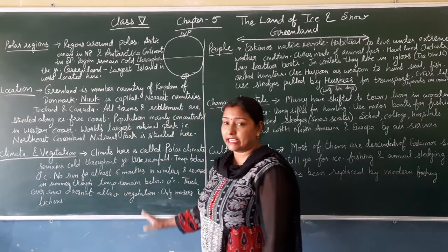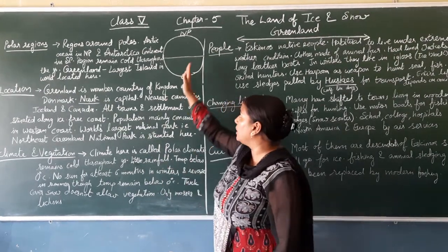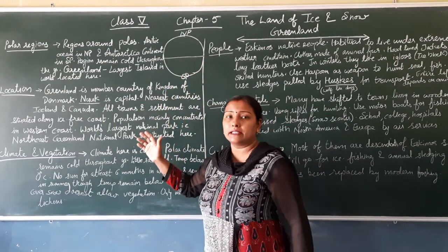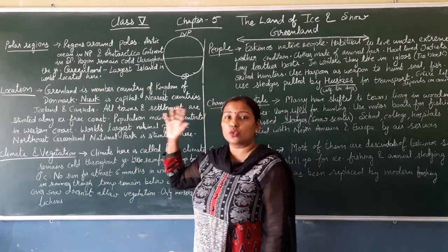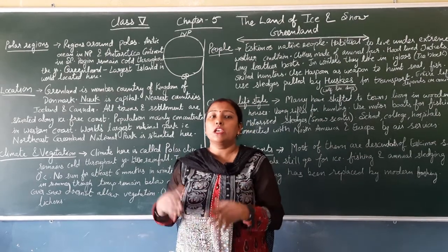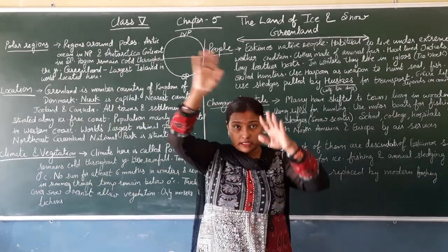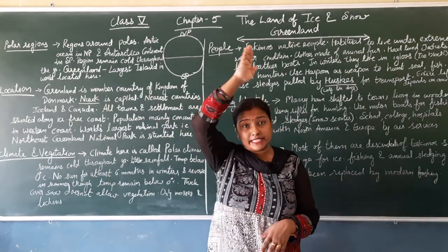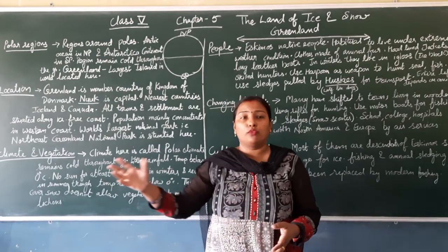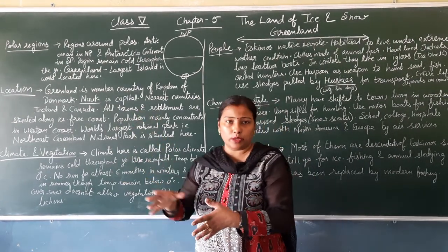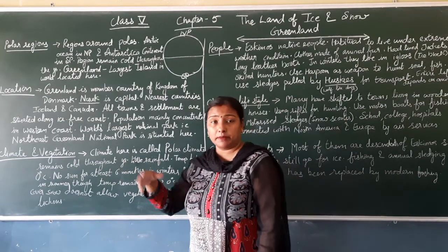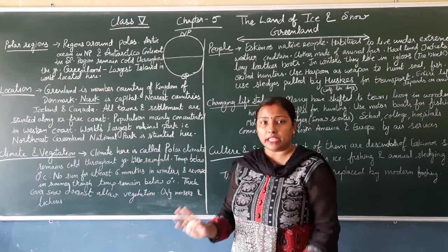There is no sun for about 6 months. When it is winter in the Northern Hemisphere, the Earth is slightly tilted and the sun is far away. So the sun's rays do not reach the polar region for about 6 months. People in the polar region don't get to see the sun during winter.